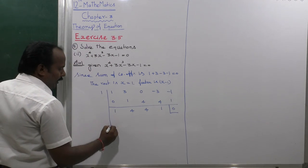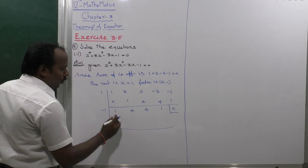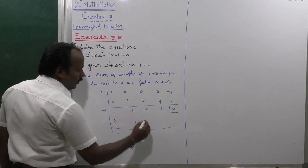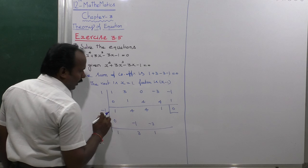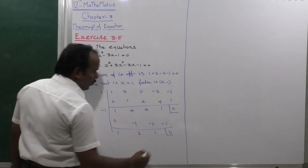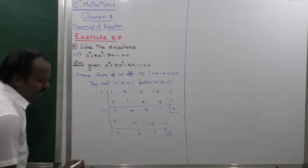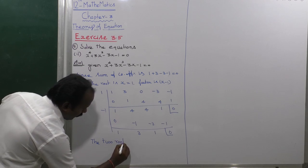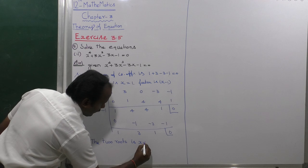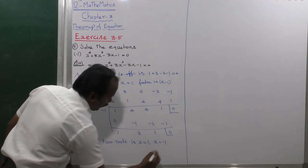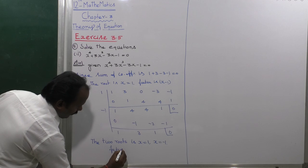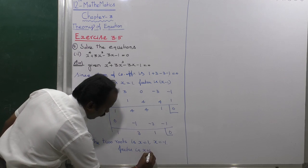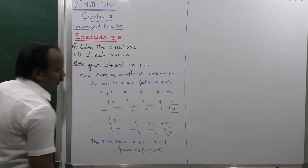Continuing with x = -1 for the second synthetic division: 1 into -1 is -1; 3 into -1 is -3; 1 into -1 is -1; we get remainder 0. So the two roots are x = 1 and x = -1.